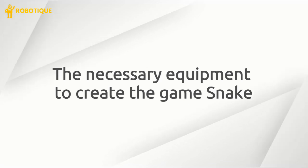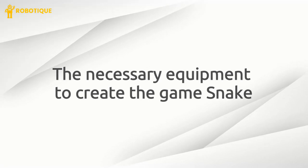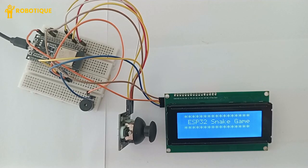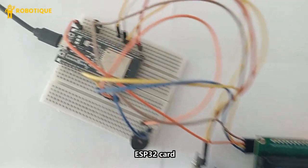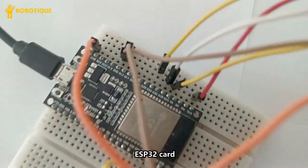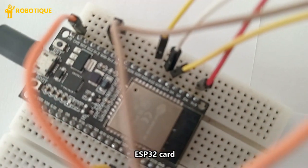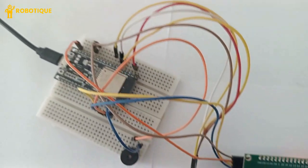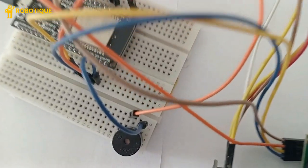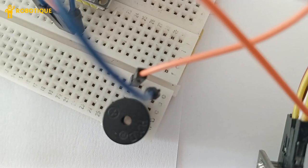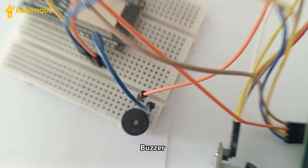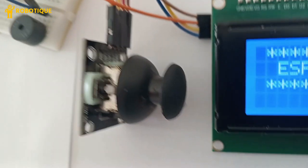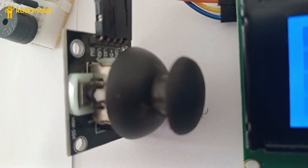The necessary equipment to create the snake game: The ESP32 microcontroller reads joystick input to control the snake's movement, updates the LCD screen with the game visuals, and controls the buzzer for sound effects. The buzzer produces a sound when the snake eats food and alerts the player with a distinctive tone when the game is over.